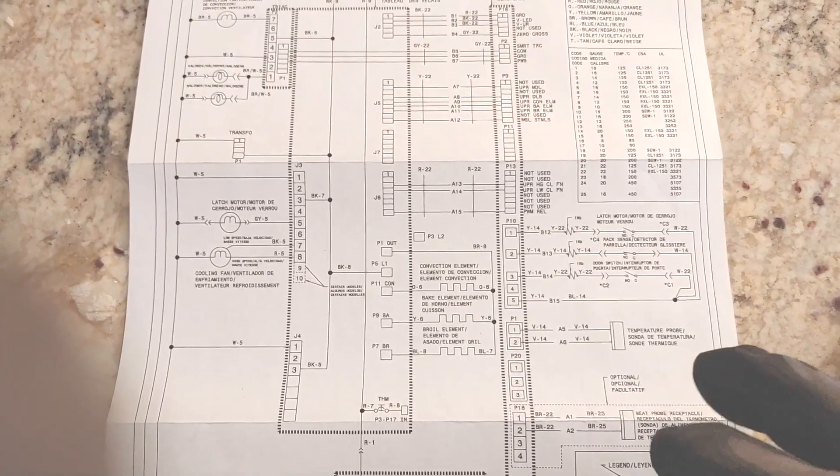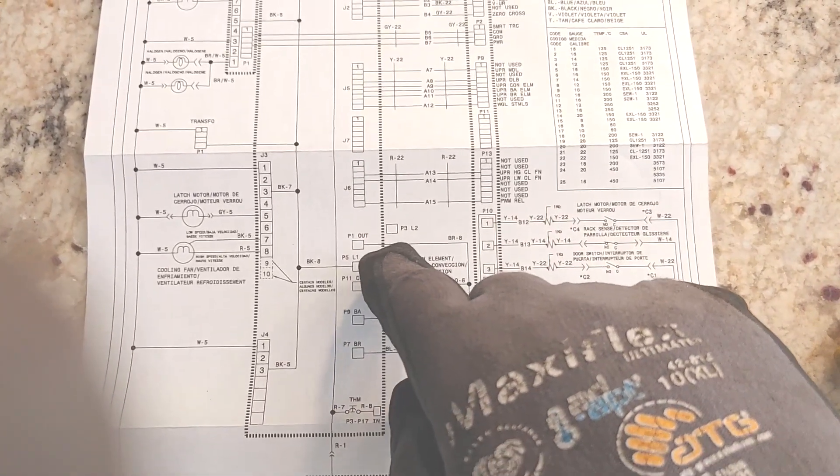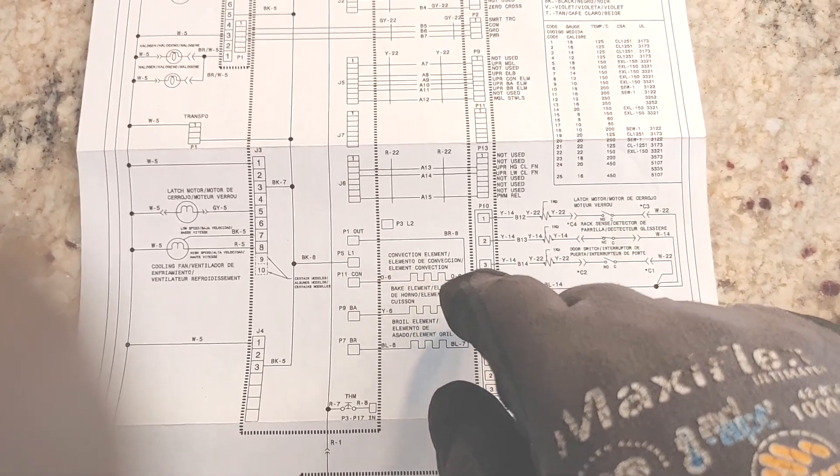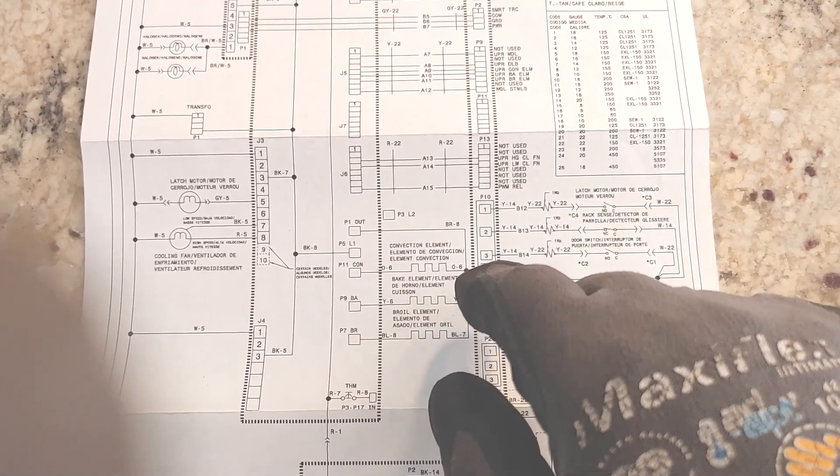We're going to look right here on the schematic. We see P1 coming out with a brown wire, and it goes to one side of the convection heater element, one side to the bake heater element, and the other side to the broil.